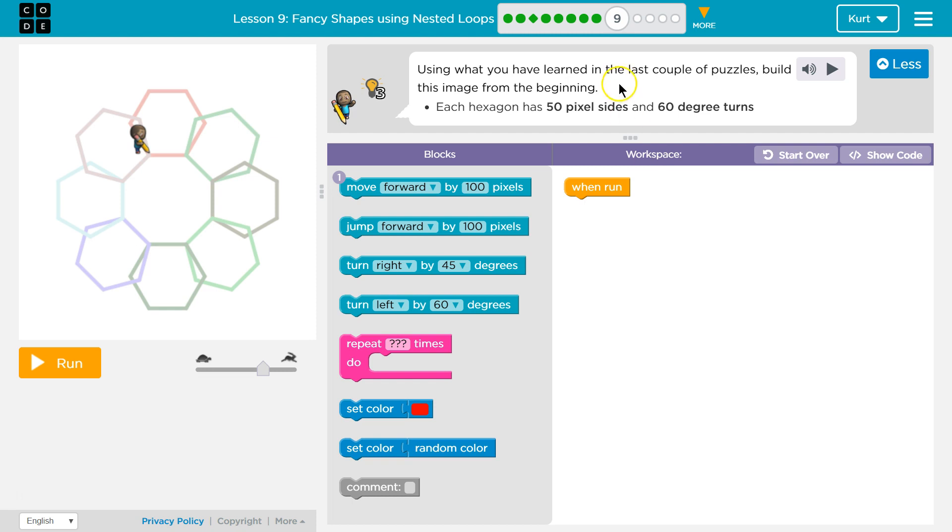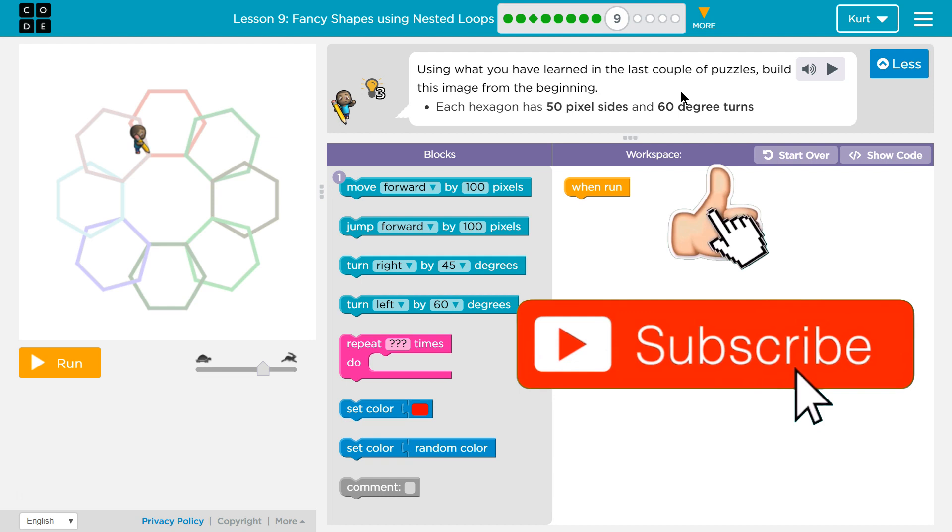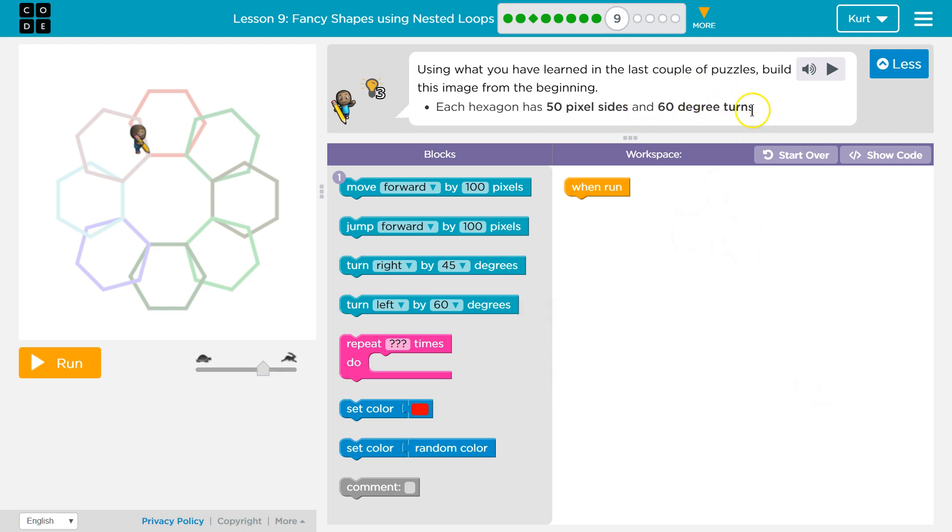Let's see what we got. Using what you learned in the last couple of puzzles, build this image from the beginning. Ooh, a challenge. Each hexagon has 50 pixel sides and 60 degree turns. Oh, look at this. And they want us to only use one move forward. This is going to be tricky.